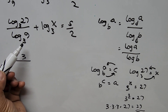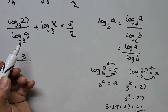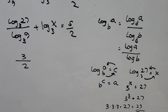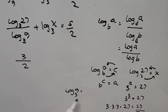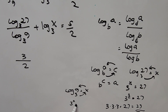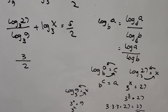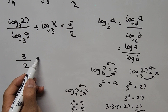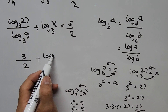For the denominator, logarithm of 9 base 3 asks: what exponent of base 3 equals 9? Transforming into exponential form gives 3 to the power x equals 9. Since 3 squared is 9, x equals 2. So logarithm of 9 base 3 equals 2. The first term simplifies to 3 divided by 2, which is 3 halves.